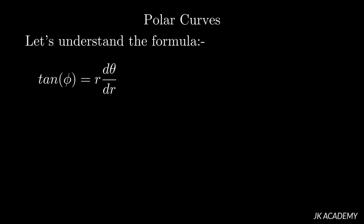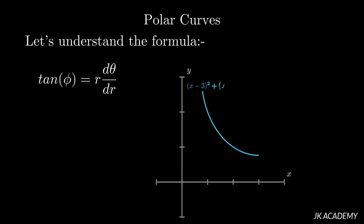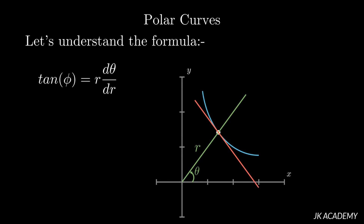Let's understand what φ is in graphical representation. Consider the x-axis and y-axis, and a curve which is part of a circle. Consider a point on this curve and join a line from the origin to that point — that is the radius vector, making an angle θ with the x-axis. Another line passes through the same point, and the angle between the radius vector and this tangent is φ. This φ in the formula represents the angle between the radius vector and the tangent.